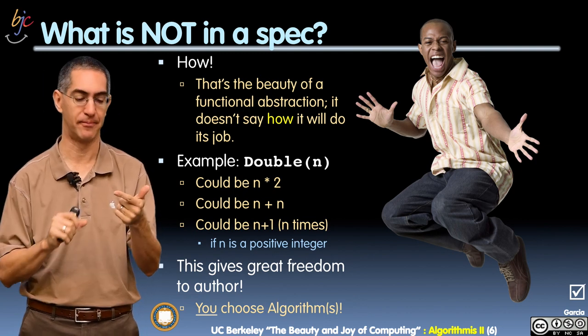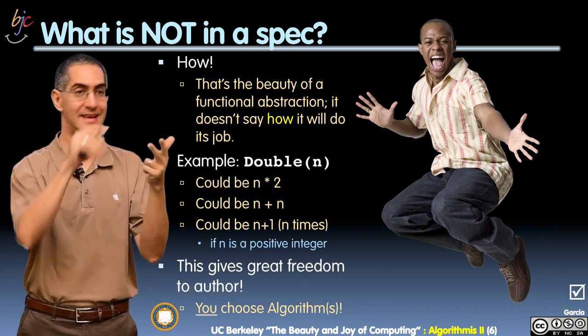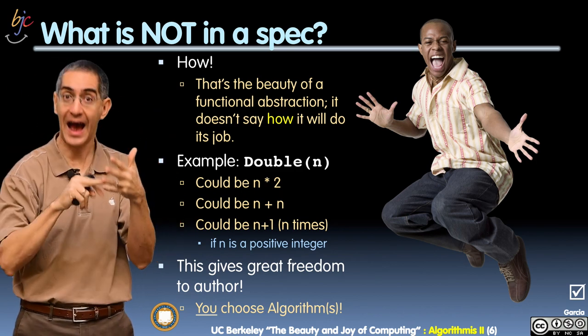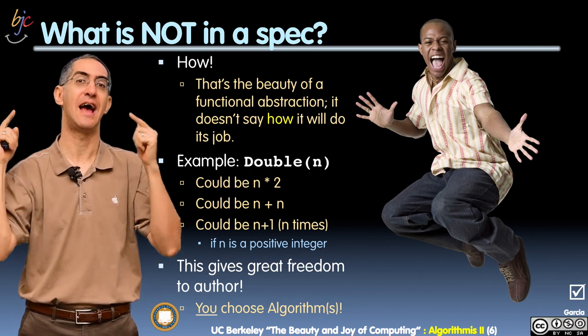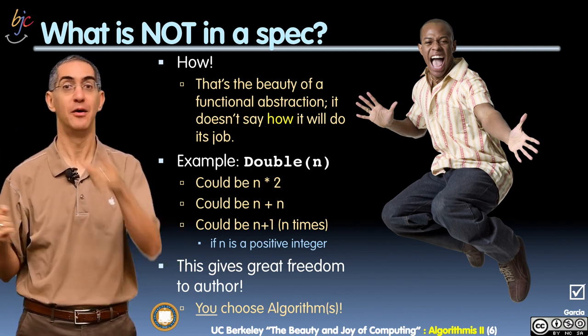So in summary, you've seen functional abstraction. What is above the line, and that is part of the spec. How it does it is below the line, and that gives you, the author, the creativity to do it your own way. All right, we'll see you at the next video.